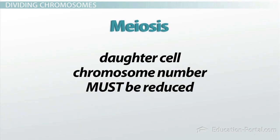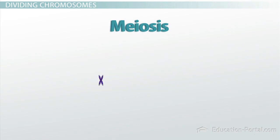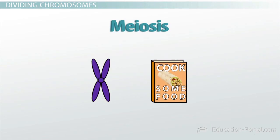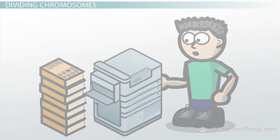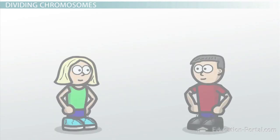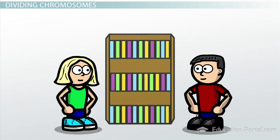To put meiosis into everyday terms, let's consider the chromosomes as cookbooks again for a minute. If mitosis was like some crazy person making copies of every one of his cookbooks, meiosis is like two roommates trying to split a cookbook collection.